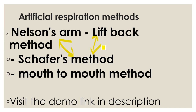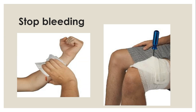If there is no other method available, you can use the mouth-to-mouth method — a demo link available on YouTube is given in the description. For small issues like bleeding, if you have a cut on the arm or somewhere, you need to apply pressure. Apply sufficient pressure for around 10 to 20 minutes and the bleeding may stop if it is a small wound.